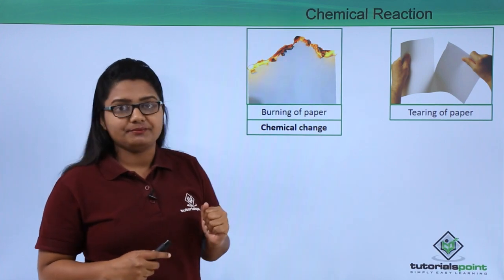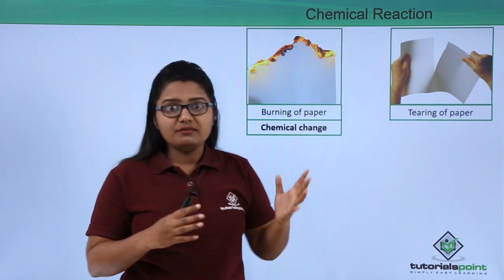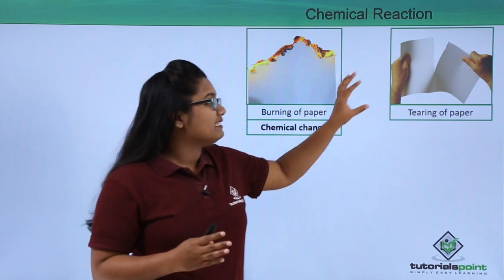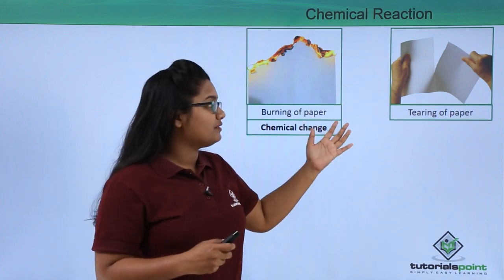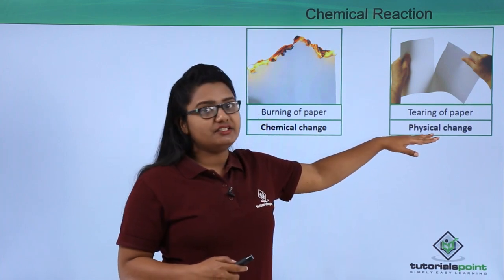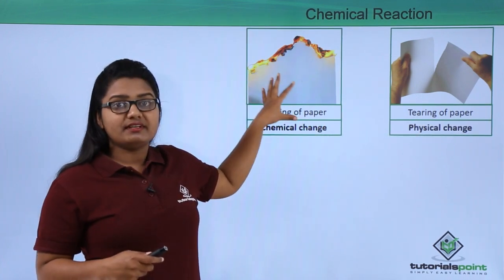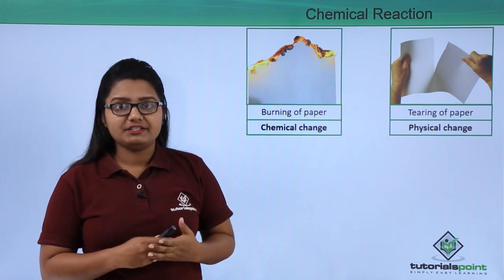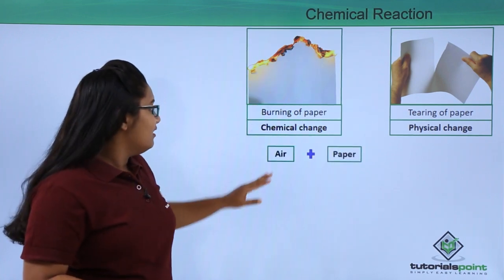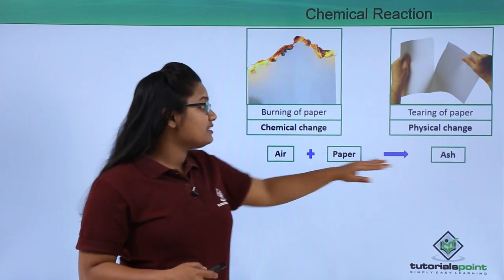Changes like tearing, which involve a change in the physical properties of something — such as the shape, size, or color of a material — are called physical changes. In the burning example, air reacts with paper to give out a new substance which we call ash.